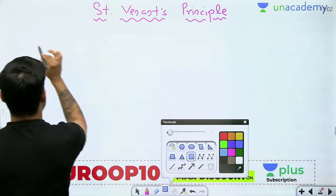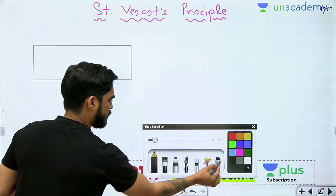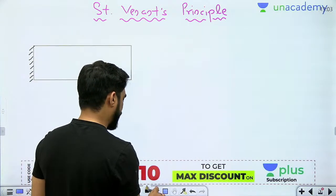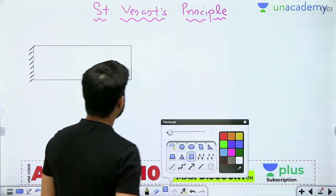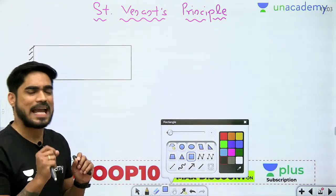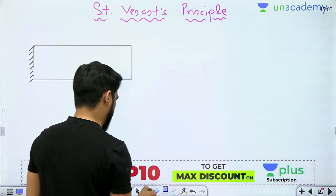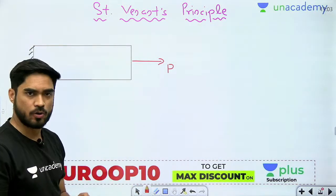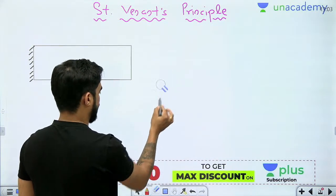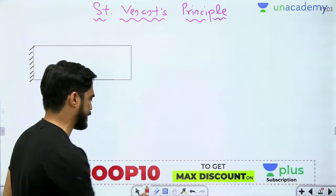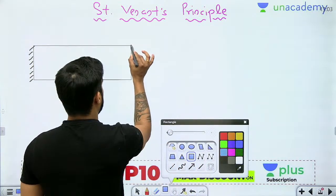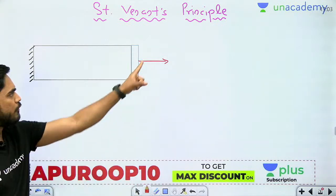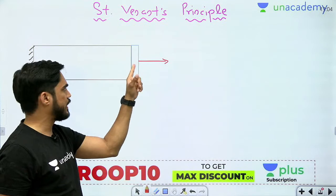Let's consider this very simple example. A bar is fixed at one end. Now we are applying a load at the other end. There are two methods to apply this load. In the first method, we will use a rigid plate — so what will happen if I attach a rigid plate and then apply the load?